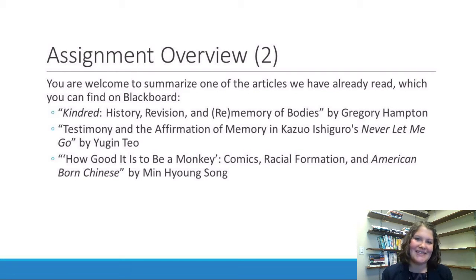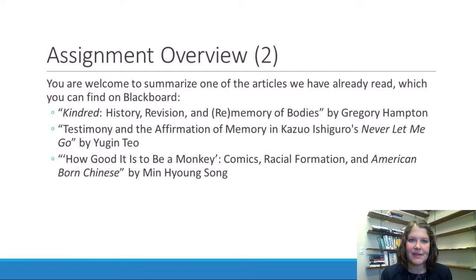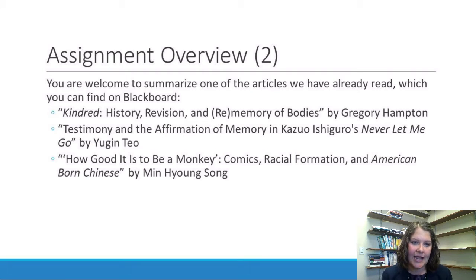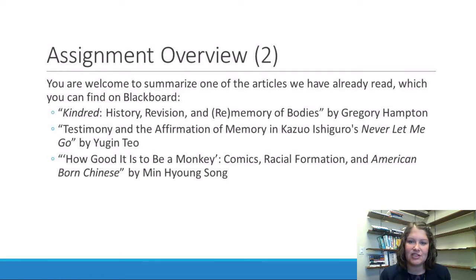The first thing you need to do is find a scholarly article to summarize. You are welcome to pick one of the articles we've already read, which you can find on Blackboard. The article on Kindred was 'Kindred: History, Revision, and Rememory of Bodies' by Gregory Hampton. The article on Never Let Me Go was 'Testimony and the Affirmation of Memory in Kazuo Ishiguro's Never Let Me Go' by Eugene Tao. And the article on American-born Chinese is 'How Good It Is to Be a Monkey: Comics, Racial Formation, and American-born Chinese' by Yin Yang Song.